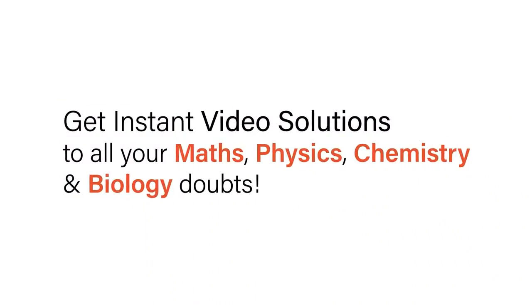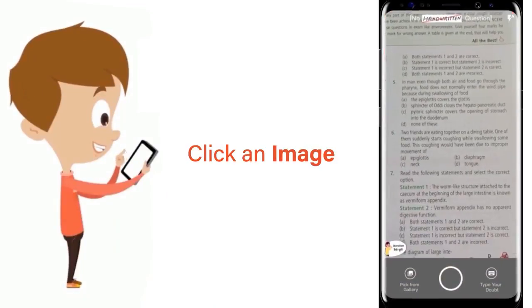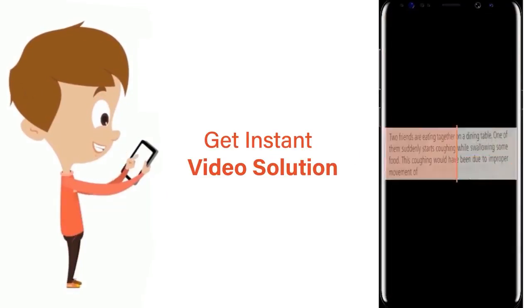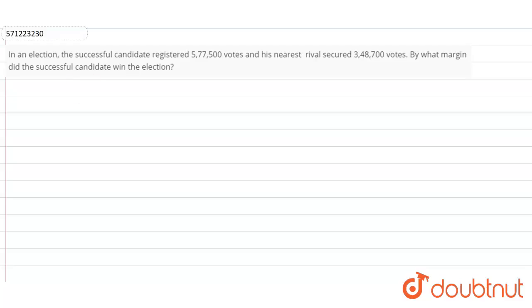With Doubtnet, get instant video solutions to all your maths, physics, chemistry, and biology doubts. Just click the image of the question, crop the question, and get instant video solution. Download Doubtnet app today. The question is: in an election,